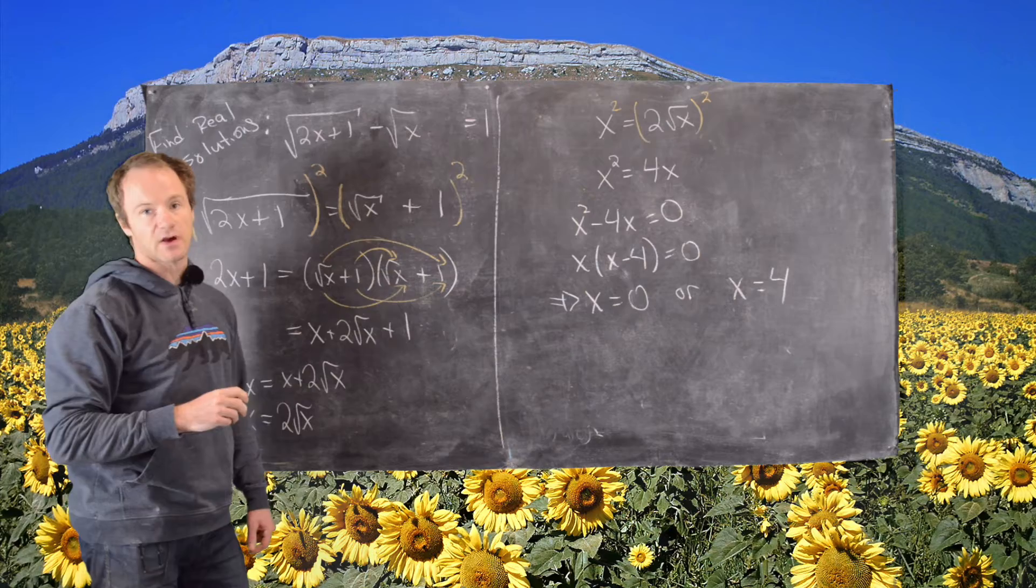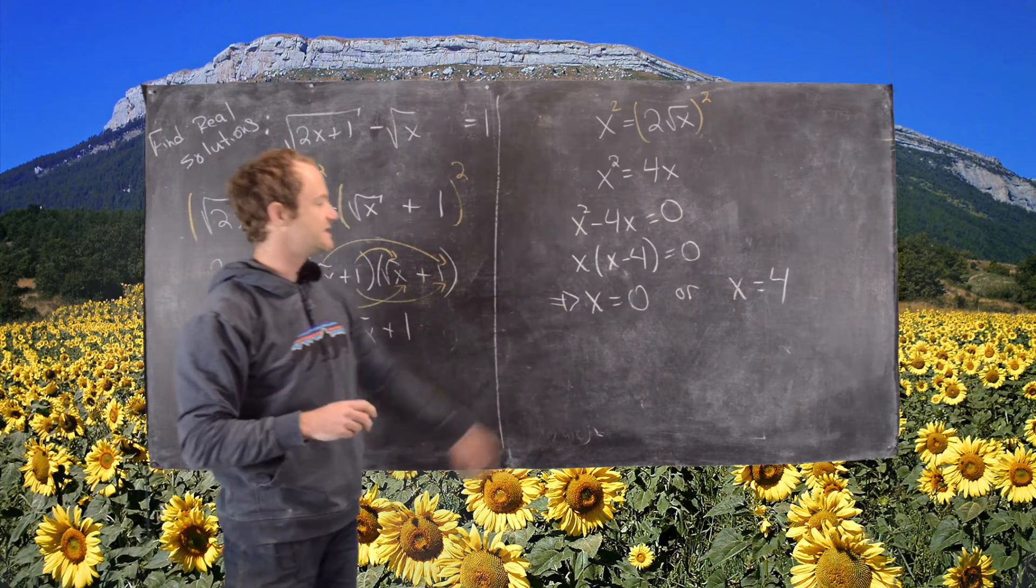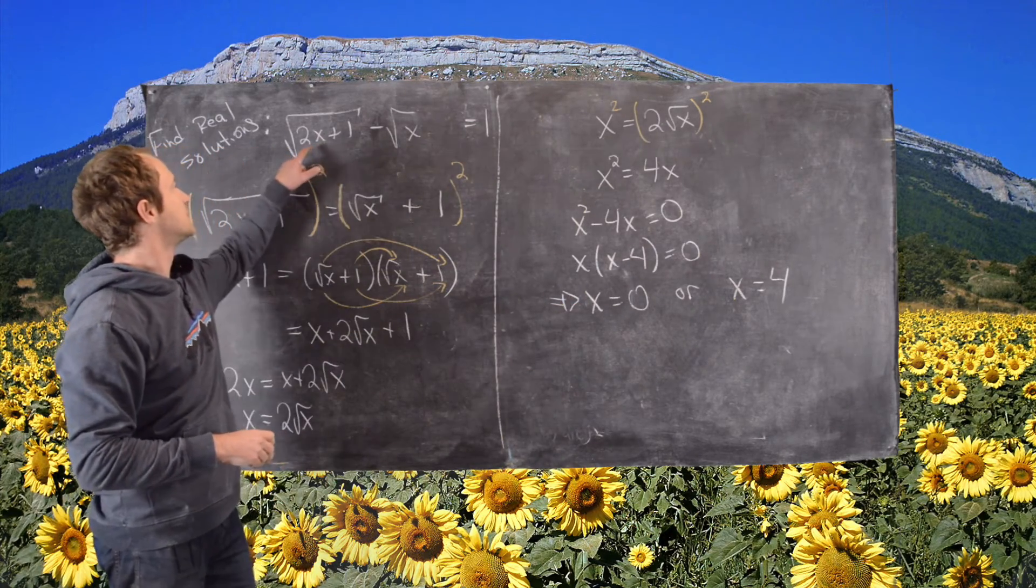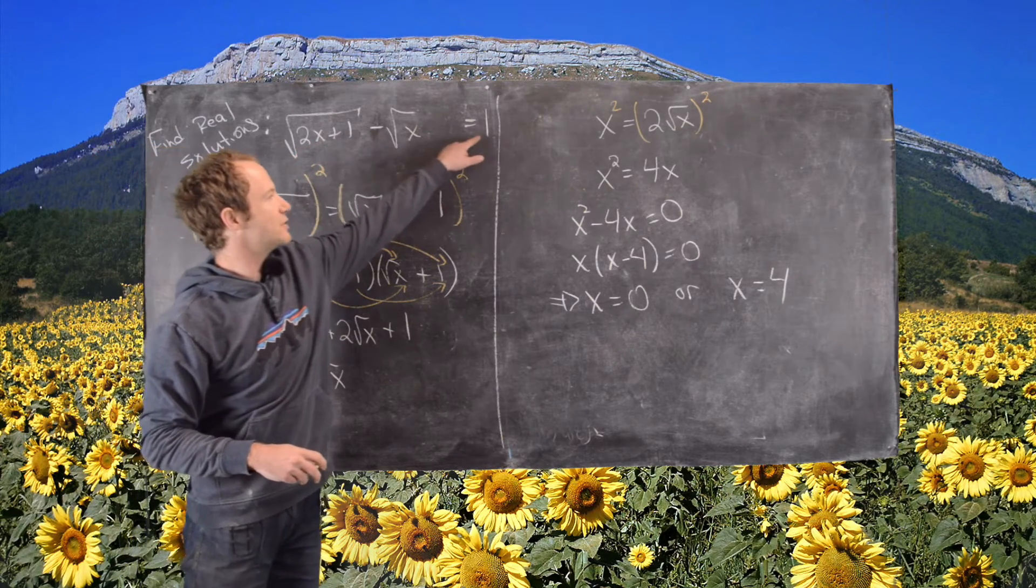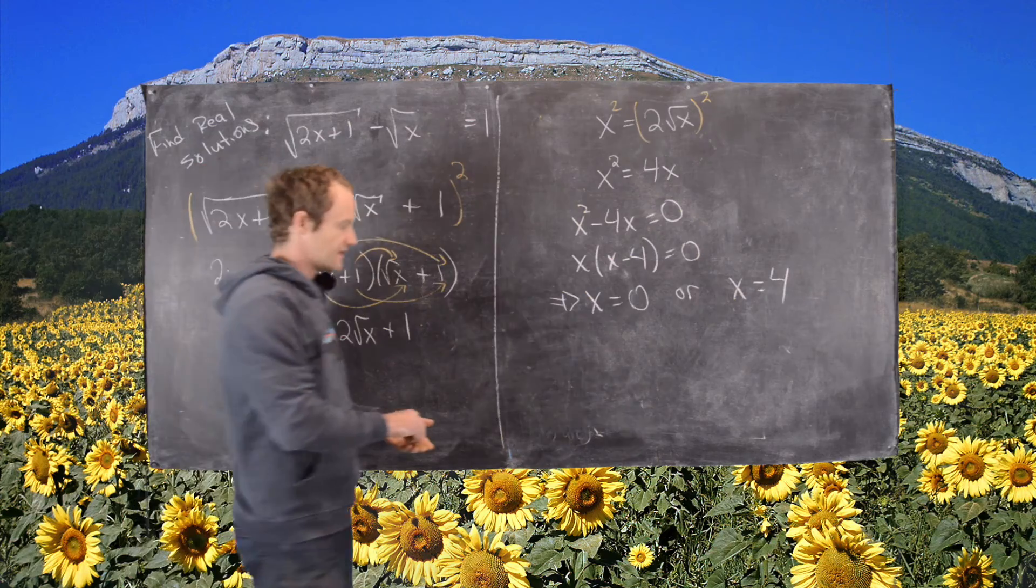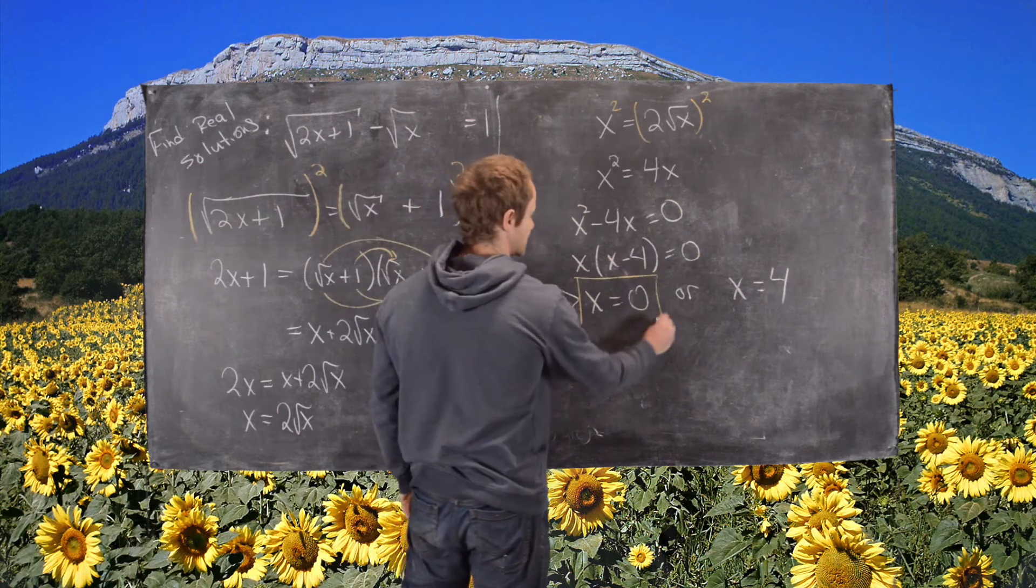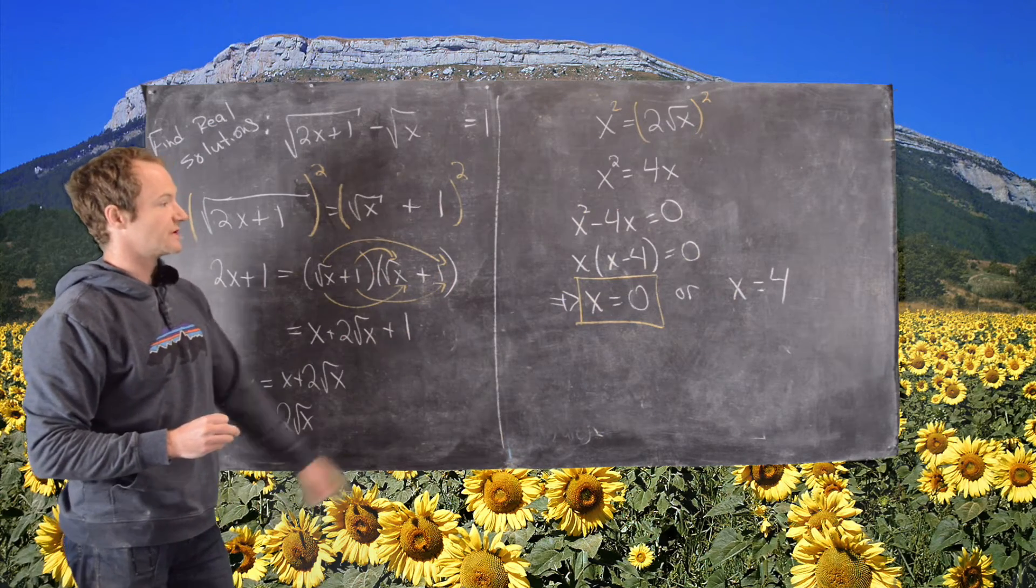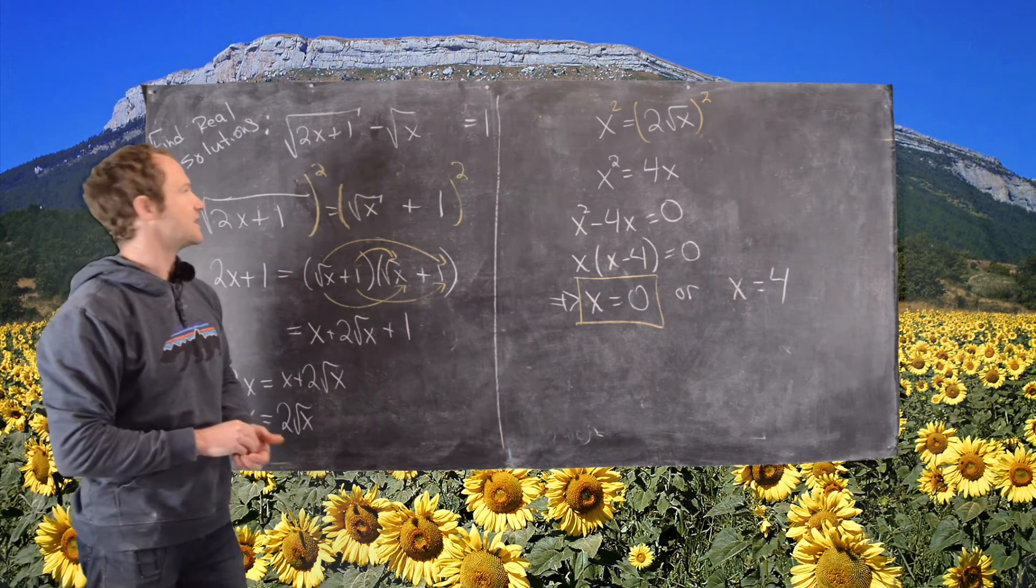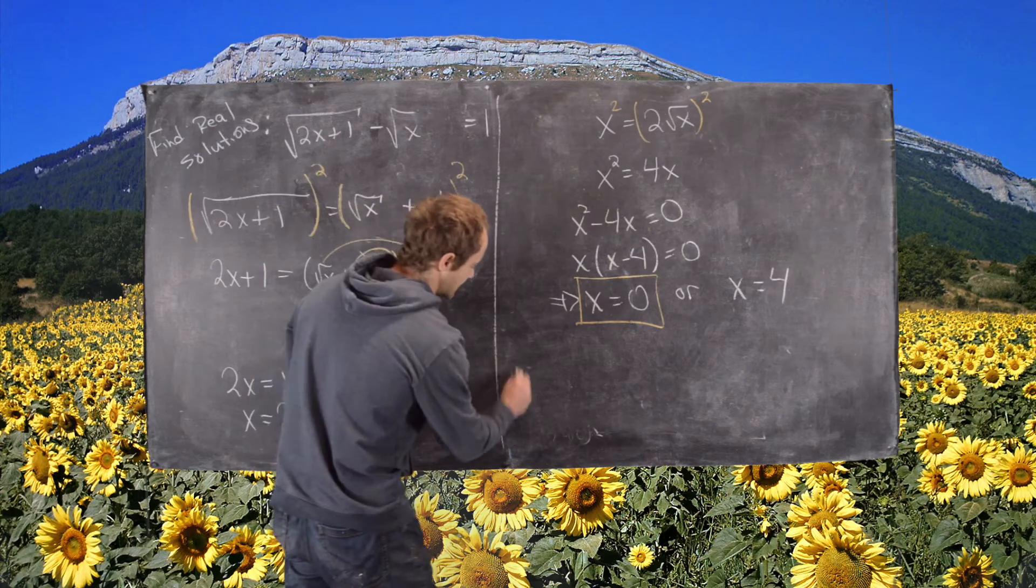If we plug 0 into the original equation, I get the square root of 1 minus the square root of 0, which equals 1. So yes, this satisfies the original equation. Now let's see if 4 satisfies the original equation.